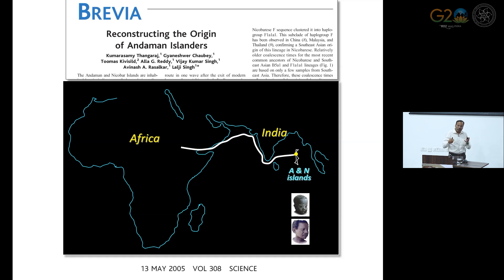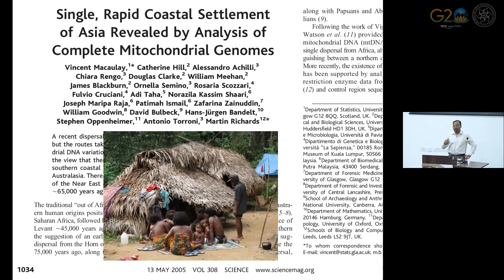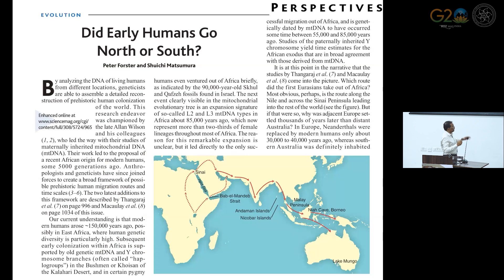That is the power of the genetic tool. Similarly, in a related study in the same issue of Science, researchers studied the Orang Asli population in Malaysia and came to the same conclusion that the coastal route is a plausible one. A combined write-up by Peter Foster showed the route of early human migration.